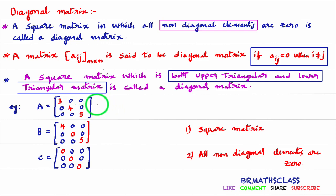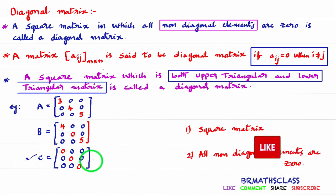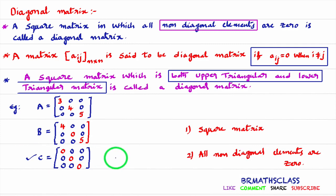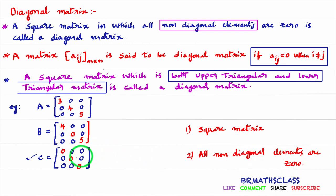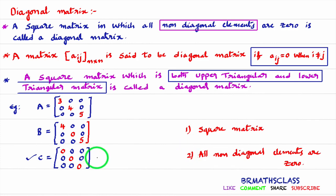Observe this matrix B — it is also both upper triangular and lower triangular. Now see matrix C, which is a zero matrix. Is this matrix a diagonal matrix or not? Many students get confused here. Very simple — just remember two points. First: is it a square matrix? Yes, it is a matrix of order 3 by 3, number of rows equals number of columns. Second: are all non-diagonal elements 0? Observe only the non-diagonal elements, forget about the diagonal elements — all non-diagonal elements are 0. So as per the definition, this zero matrix C is a diagonal matrix.